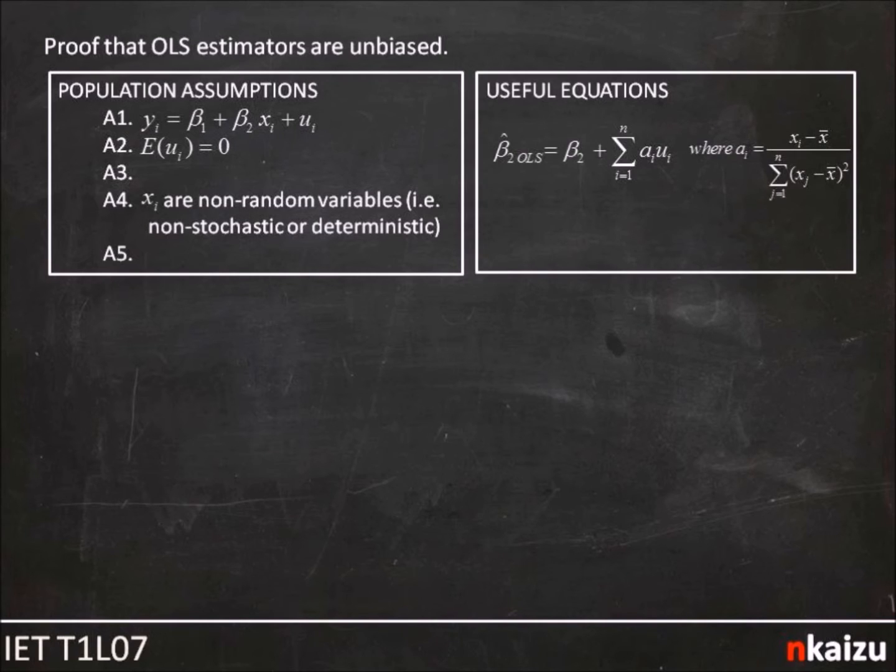To do so, though, we'll need a few helpful equations, the first of which is our formula for OLS. It's not the usual form we're used to, though, it's the decomposed formula, where we have beta_2 OLS hat is equal to beta_2, i.e. the population parameter we're trying to estimate, plus the summation of a_i u_i, where a_i is a function of a bunch of X's. The second equation is just the simple definition of beta_1 OLS hat, where we've defined the y-intercept as equal to the mean of y, y-bar, minus beta_2 OLS hat X-bar.